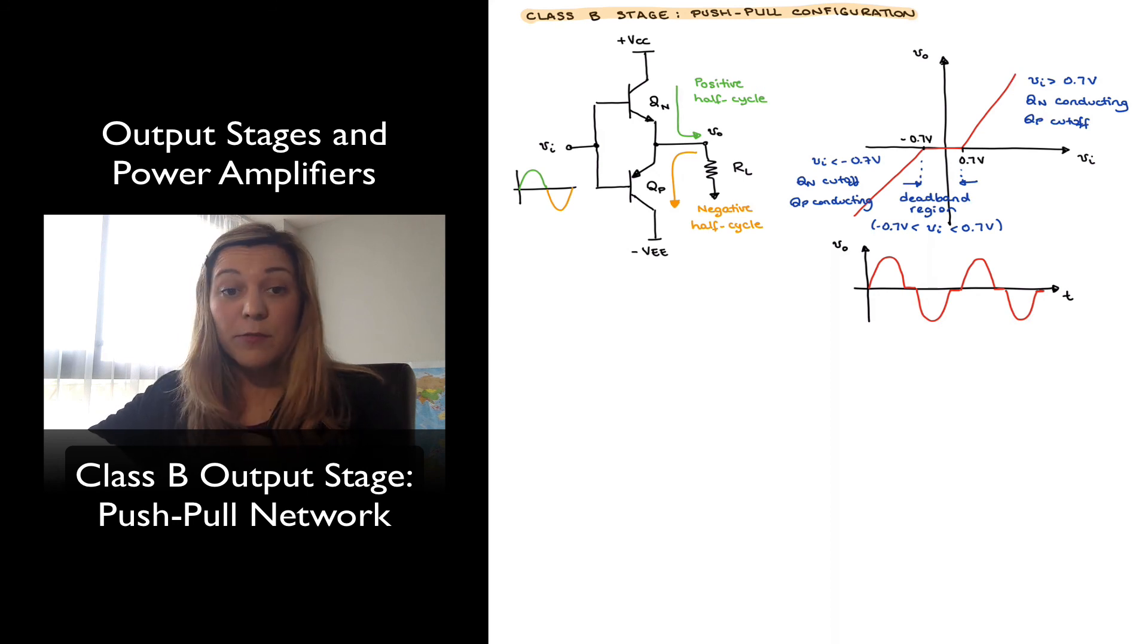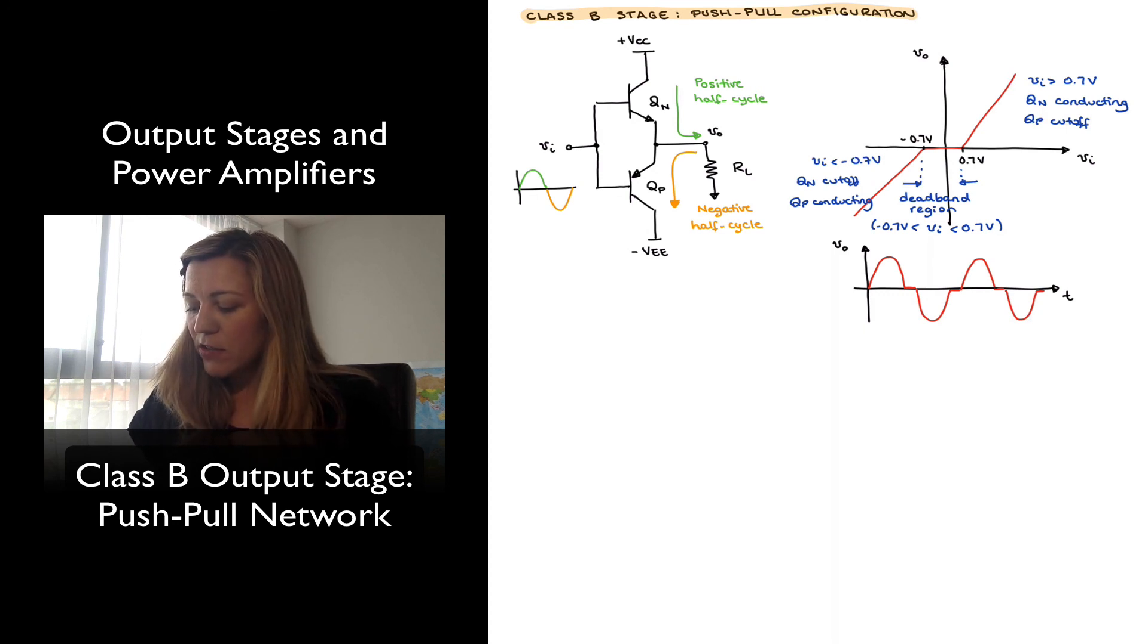Now the effect of that deadband region, we can see it in the plot directly underneath the time domain plot of VOUT. We can see that instead of a sinusoidal signal around the zero crossing points, we have that flattening of the sinusoidal signal. And so that's essentially distortion in our output signal, which is referred to as crossover distortion. And so that will be a drawback of the Class B configuration. And we will see later on some techniques to avoid that crossover distortion or to do away with it.